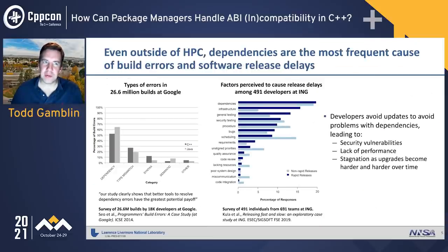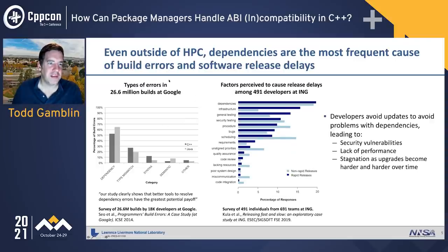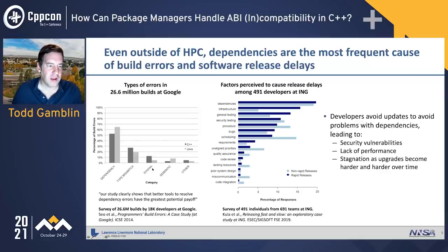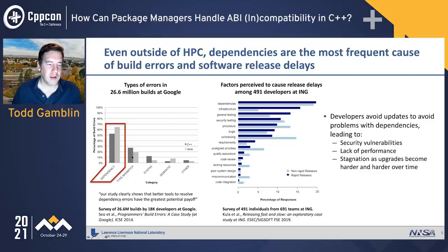Outside of HPC, dependencies are still the most frequent cause of build errors and software release delays. There are two studies you can look at. One from Google looked at 26 million different builds done internally and tried to analyze what made builds fail — looking at both C++ and Java. The study clearly showed that dependencies were the biggest problem in terms of why builds failed, while type mismatches, syntax, and semantic issues were much less frequent.